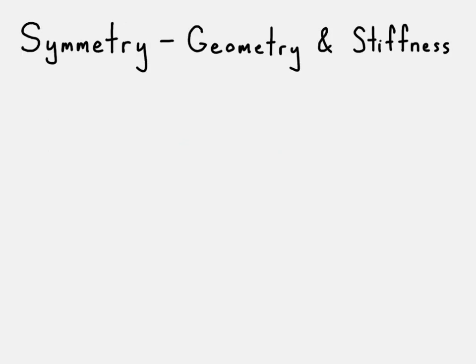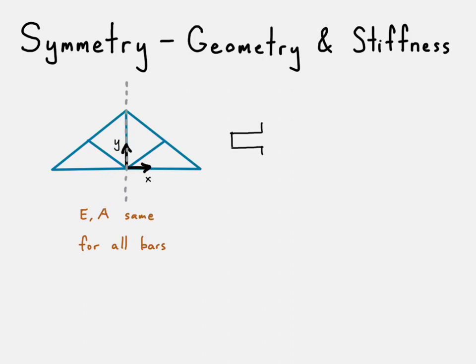So, first we take a look at the geometry and stiffness. Looking at our model again, we go ahead and split it down the axis of symmetry. We say that the elastic modulus cross-sectional area are the same for all bars. And we just draw one part of it left or the right side.